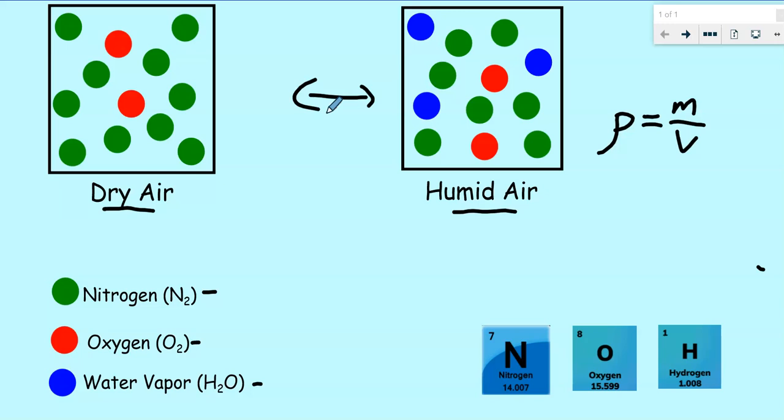Most people answer this question and they say humid air is more dense. I think that's because whenever we've gone somewhere very humid, maybe near the ocean or Florida, and you step off that plane it just feels dense. The air feels thick and heavy. So our life experience often leads people to think that humid air is more dense. But let's see if we can prove or disprove that hypothesis.